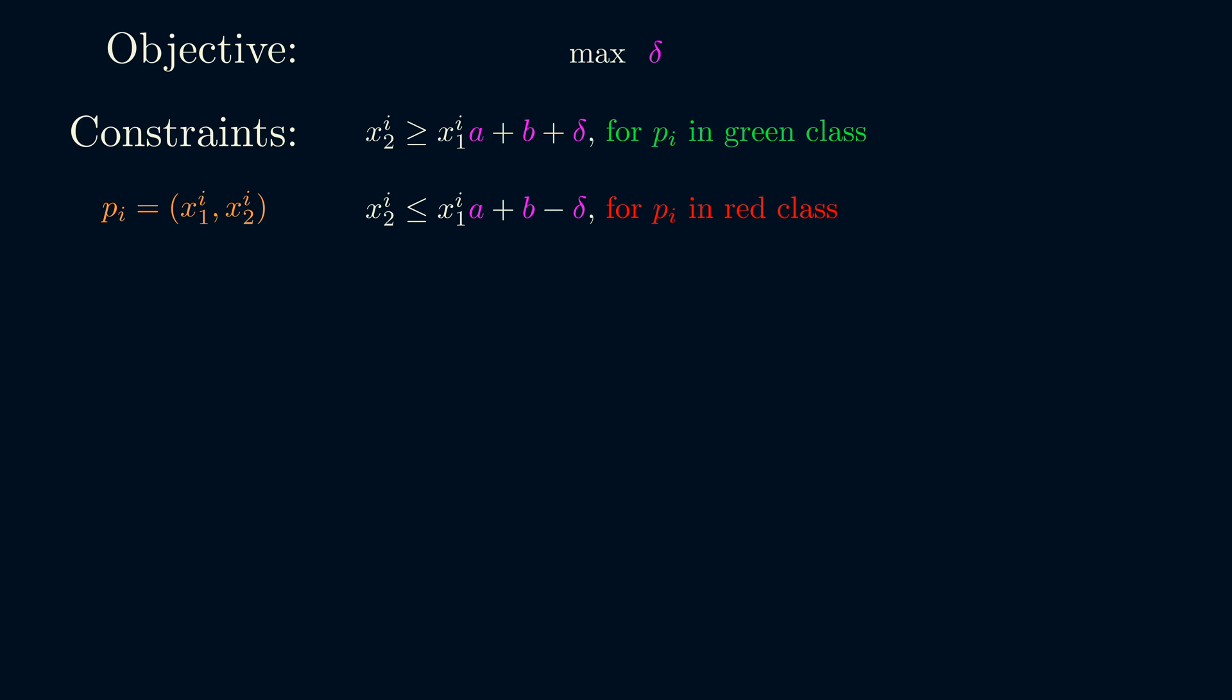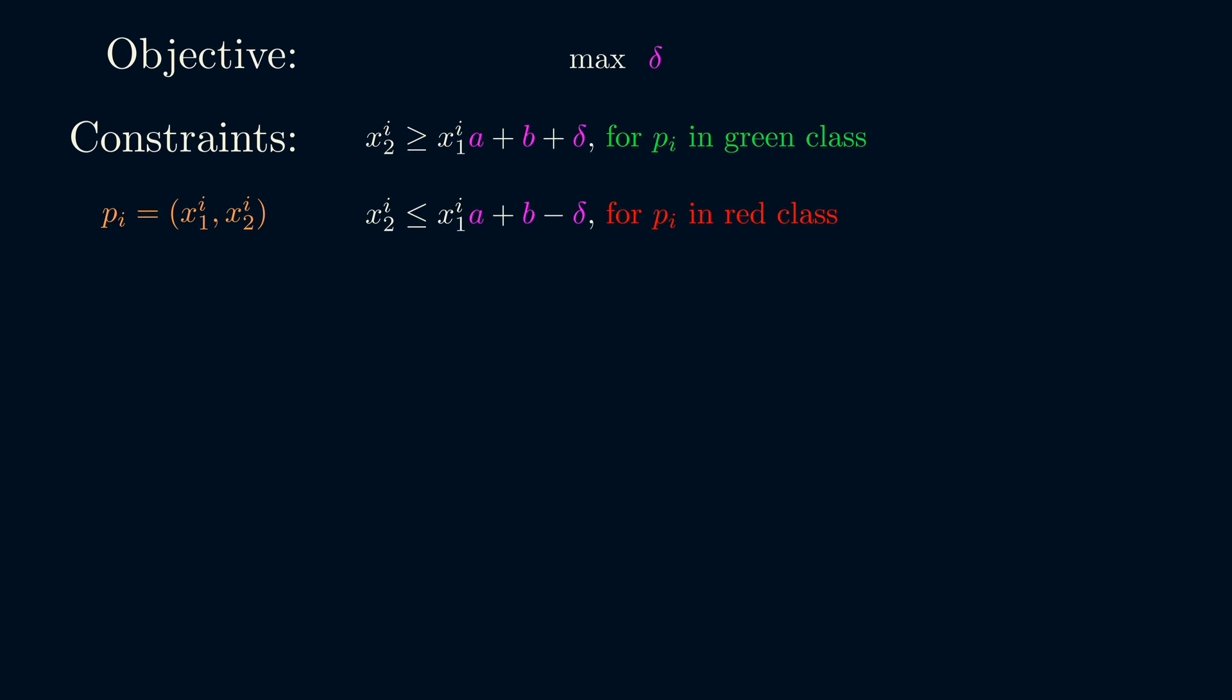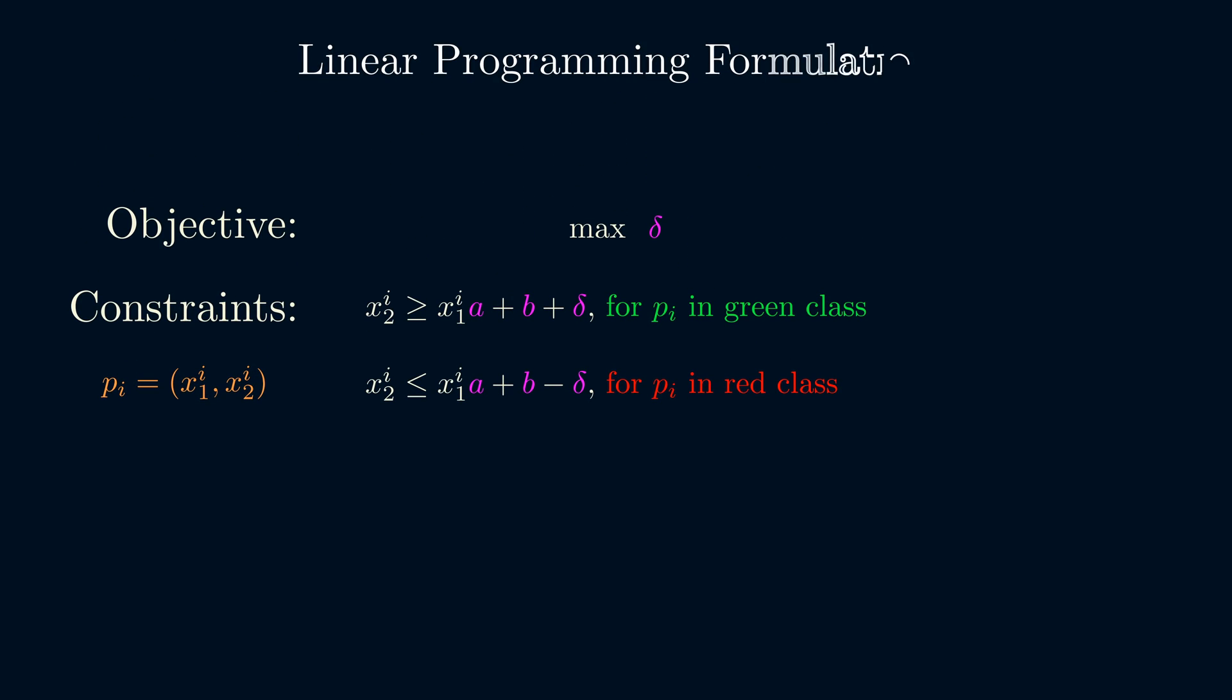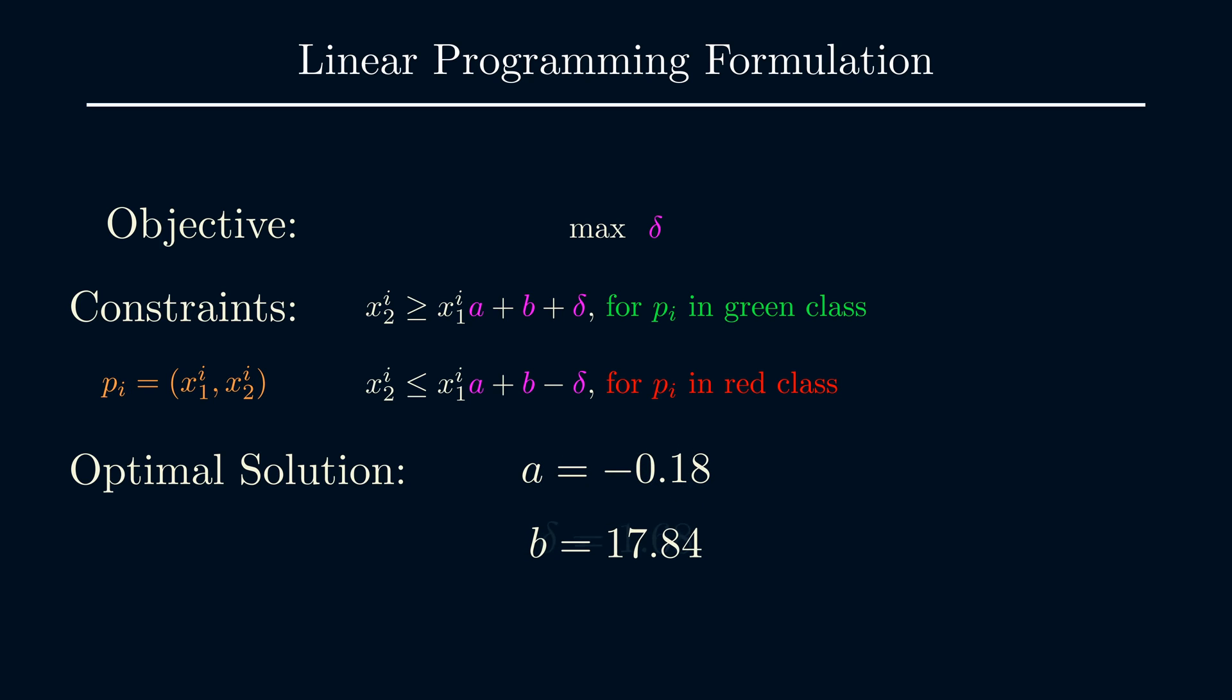When the objective and constraints are linear like it is here, this is called a linear program. A linear programming solver can quickly find the optimal solution. Here, the optimal A is negative 0.18, optimal B is 17.8, and optimal delta is 1.68.